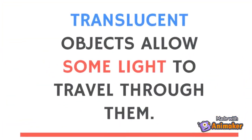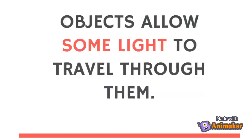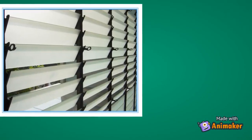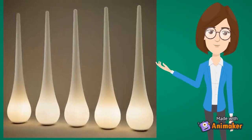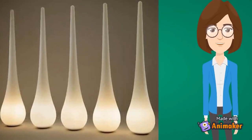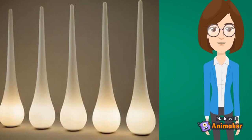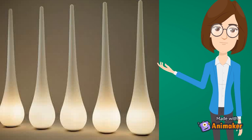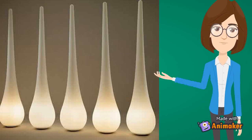Translucent objects allow some light to travel through them. Materials like frosted glass and some plastics are translucent. When light strikes translucent materials, only some of the light passes through them. The light does not pass directly through the material, and we cannot see clearly through them — objects on the other side appear fuzzy and unclear.